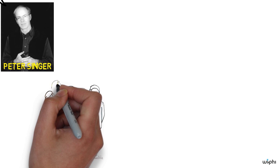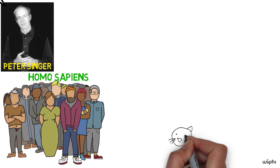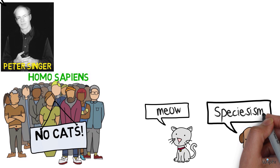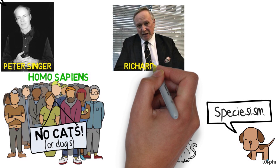In fact, it turns out that the only property that all and only humans seem to have is membership in the species homo sapien. But if we say that all and only human beings have moral status for that reason, then how are we any different at all from racists or sexists or anybody else who discriminate against others solely on the basis of membership in a particular biologic category?